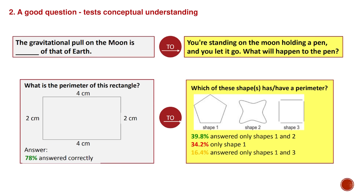A good question tests conceptual understanding. For example: 'What is the perimeter of this rectangle?' had 78 percent of students answering correctly, compared to 'Which of these shapes have a perimeter?' Checklist for creating good questions: make questions clear and focused, use clear words, keep them simple, avoid confusing pairs.